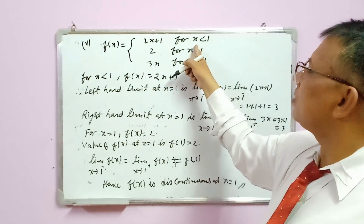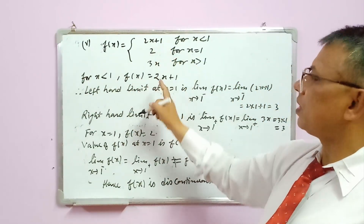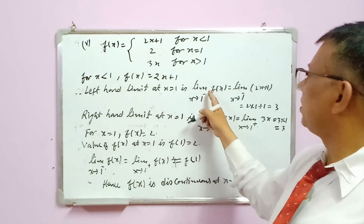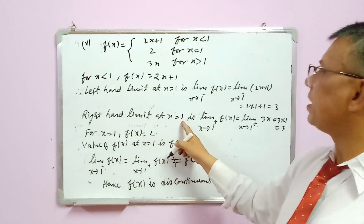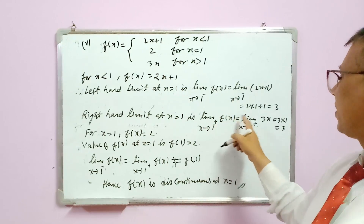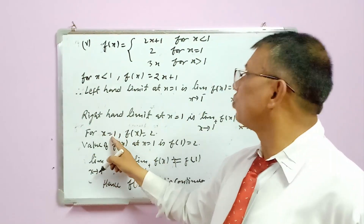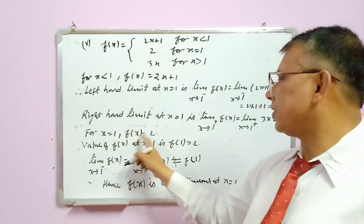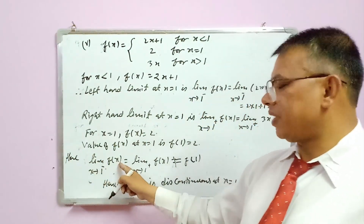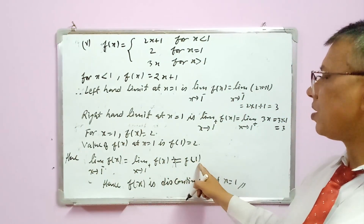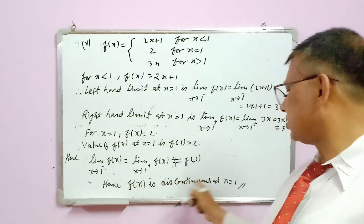Next: f(x) = 2x + 1 for x < 1, f(1) = 2, f(x) = 3x for x > 1, at x = 1. Left-hand limit: limit as x tends to 1⁻ of (2x + 1) = 2(1) + 1 = 3. Right-hand limit: limit as x tends to 1⁺ of 3x = 3(1) = 3. Value at x = 1: f(1) = 2. Left-hand limit = right-hand limit = 3, but f(1) = 2, which is different. Hence f(x) is discontinuous at x = 1.